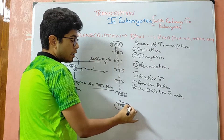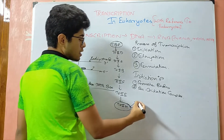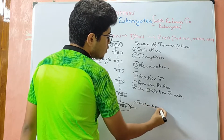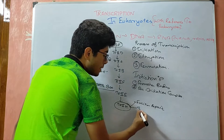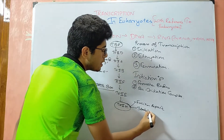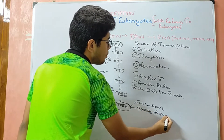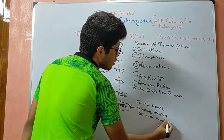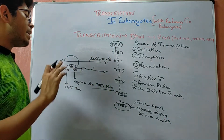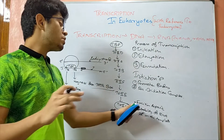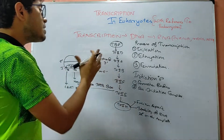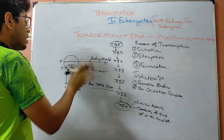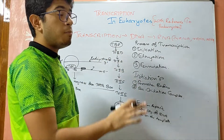Transcription factor IIH (TF2H) has two functions: it helps in excision repair and also plays a role in maintaining the stability of RNA polymerase on the template strand. Together, these steps lead to the formation of the pre-initiation complex.